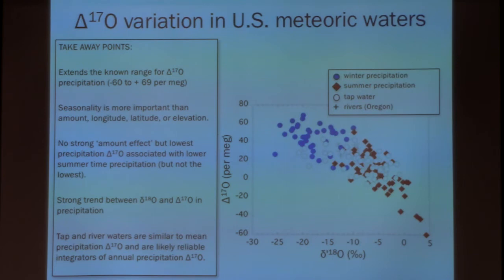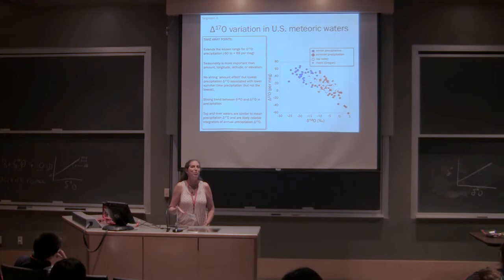All right, so our takeaway points from what we've known now so far is that we extend the range. Now we have that precipitation data, at least from the U.S. We know that we could get a big range in CAP 17O values. I would say that these storms are probably, even though they represent a range, they're probably not going to contribute a lot to any system because they're probably small events. But what we have to do is, if you have summer recharge in a system versus winter recharge in a system, is this a tool for telling summer versus winter recharge? I don't know, but seasonality seems to be the biggest take home message so far from these data. There's no strong amount effects. The lowest values are driven probably by evaporation. There's a strong trend in delta 18O and CAP 17O, but we can't explain it with our usual culprits. And these tap waters seem to be representative, which is nice to see.